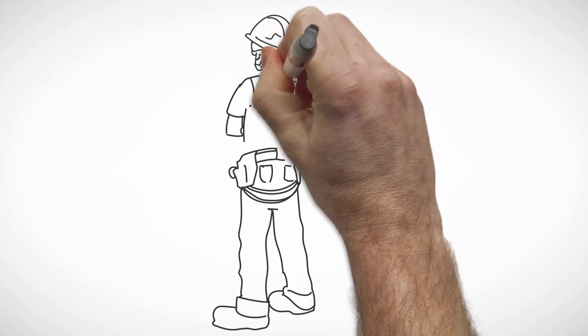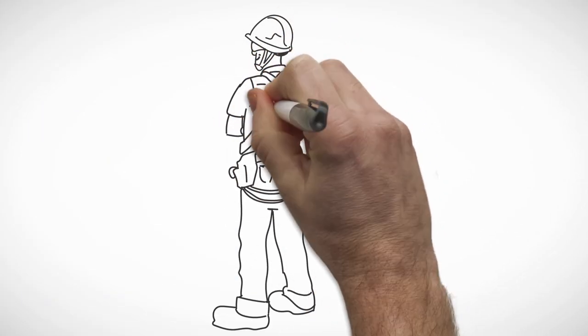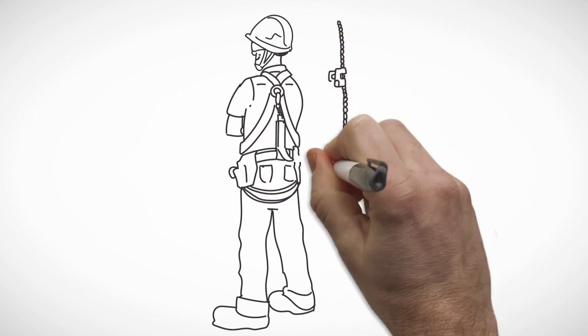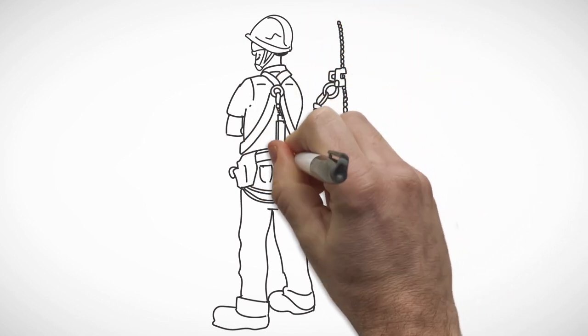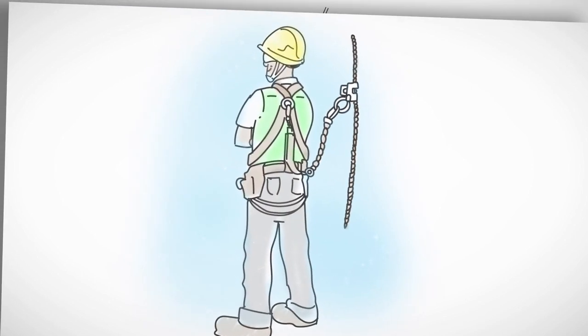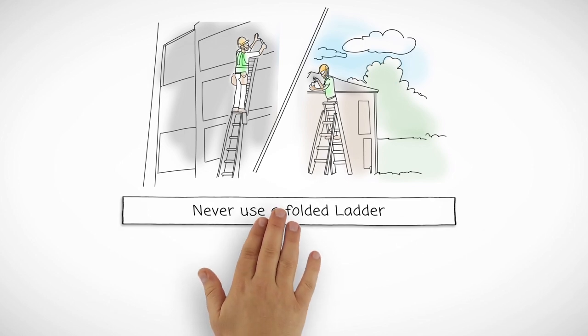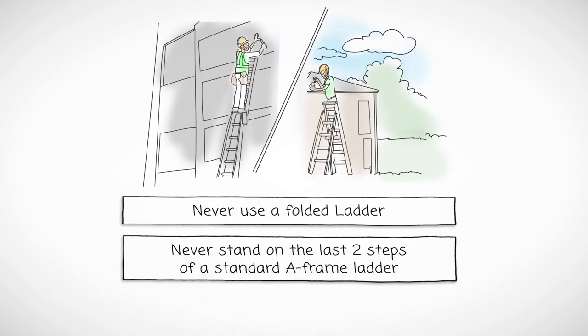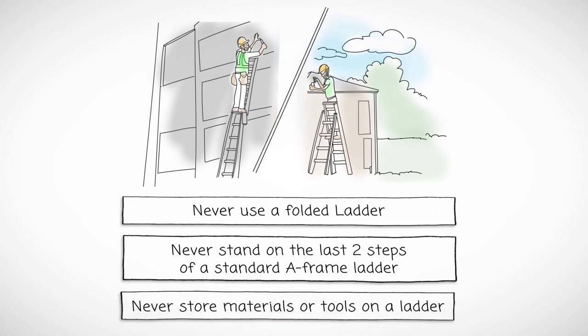When working at a height greater than four feet or when three points of contact cannot be maintained, 100% fall prevention is required. Never use a ladder when it's folded. Never stand on the top two steps of a standard A-frame ladder. And never store material or tools on a ladder. Any job-specific ladder requirements will be covered during safety huddles and job briefings.